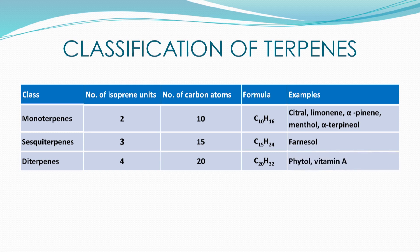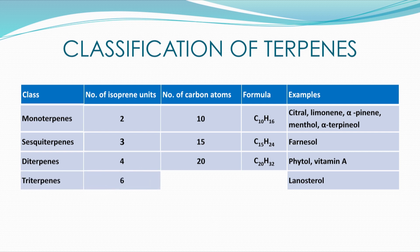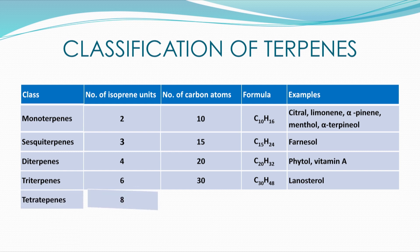Their molecular formula is C20H32, and vitamin A belongs to this class. Lanosterol is an example of triterpenes, so it contains 6 isoprene units and has a molecular formula of C30H48. Next, we have tetraterpenes with 8 isoprene units and C40H64 being their molecular formula.